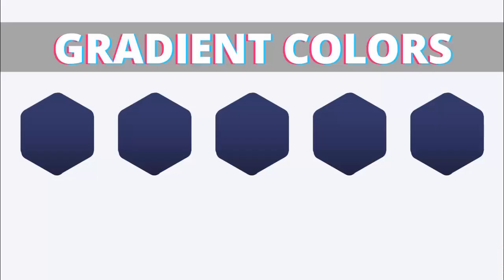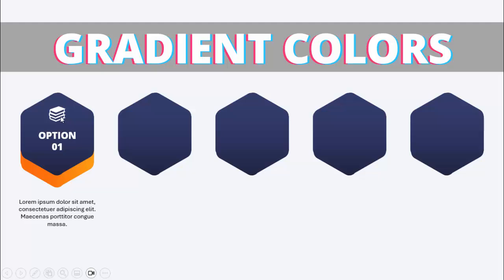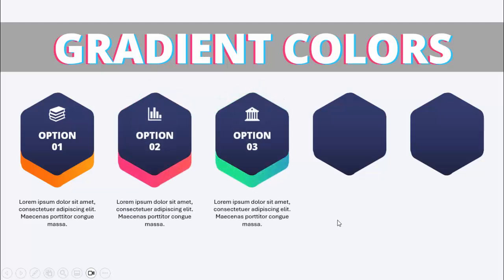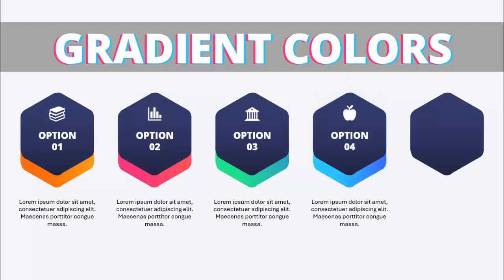In today's tutorial I'm going to show you how to create gradient color options with hexagon shapes. This is how the slide looks — I have created five hexagon shapes, and when clicked they come with a gradient color, an icon, the option number, and detail text at the bottom. When I click it will show option 2 with a different color combination, option 3, option 4.